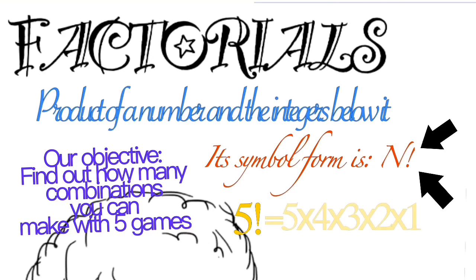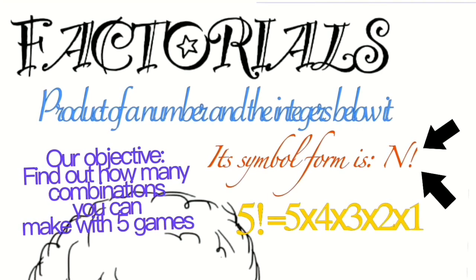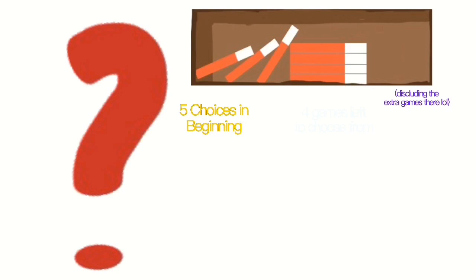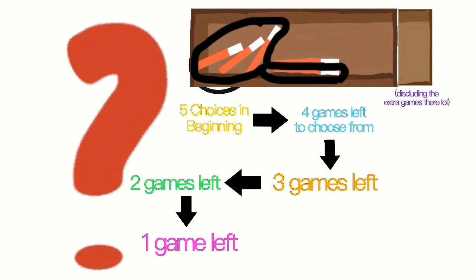This means multiplying 5 by 4 by 3 by 2 by 1. The reason why you can multiply these integers is because you have 5 choices on which game can come first. Then, when deciding the game that goes next, you only have 4 choices left, since the first game you chose cannot be used again for the arrangement. This goes on and on until you are stuck with only one choice to choose for your last game on your shelf.